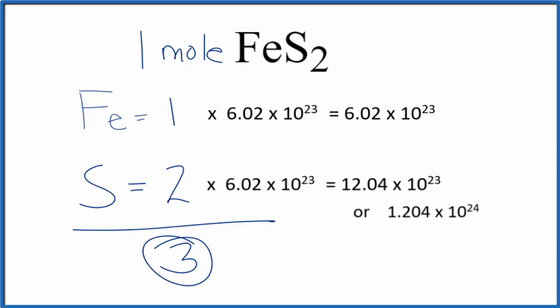This is Dr. B with the number of atoms in FES2. We have one iron and two sulfur atoms, a total of three atoms in FES2. Thanks for watching.